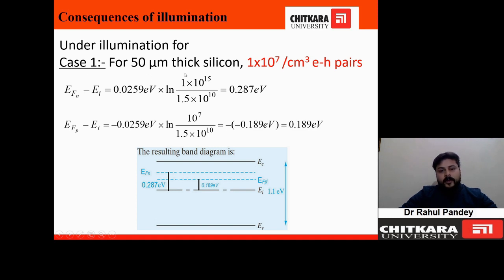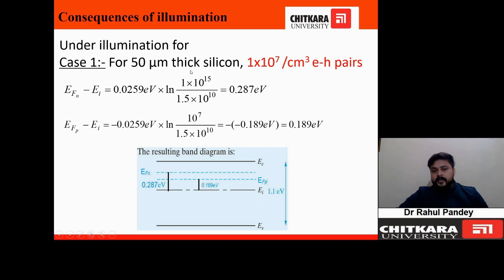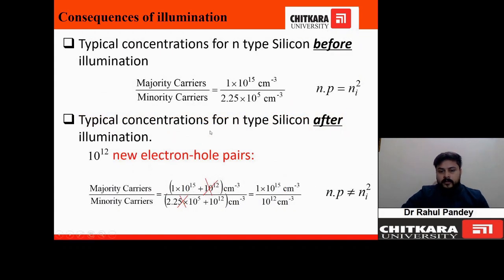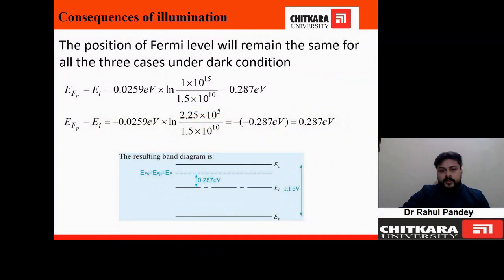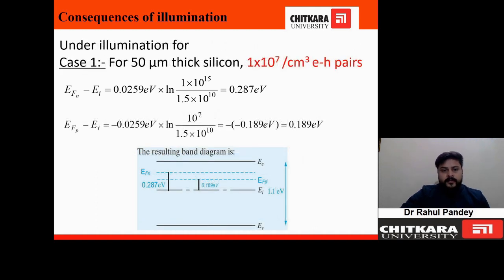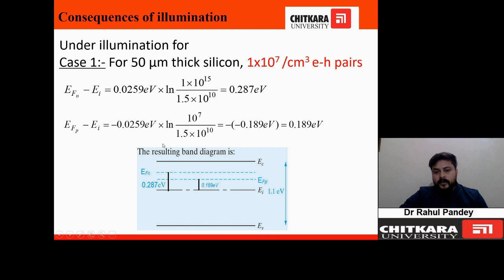For Case 1 (50 µm wafer), 10⁷ electron-hole pairs are generated. The electron quasi-Fermi level position remains the same as the dark condition since majority carrier concentration is unchanged. However, the minority carrier (hole) concentration changes significantly. Using the quasi-Fermi level formulas, we compute the difference between the electron quasi-Fermi level and E_I, and between the hole quasi-Fermi level and E_I. We obtain two different Fermi levels: one describing electron concentration and one describing hole concentration — the Fermi level has split.